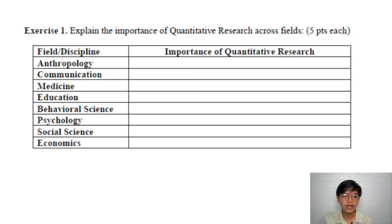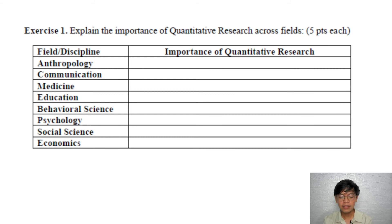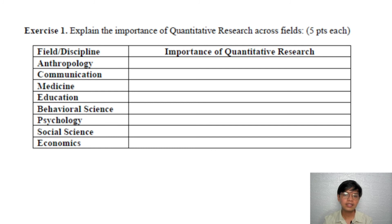To better explain how quantitative research is used across different fields, let's try to answer exercise one. The direction reads: explain the importance of quantitative research across fields, five points each. For this activity, you're only allowed to pick two to three fields, and you're also allowed to search the internet. But please, when searching for sources, try to evaluate if the source is credible or not. Also, please avoid copying answers from the internet — try your best to paraphrase. You learned your paraphrasing techniques in academic writing in your grade 11.